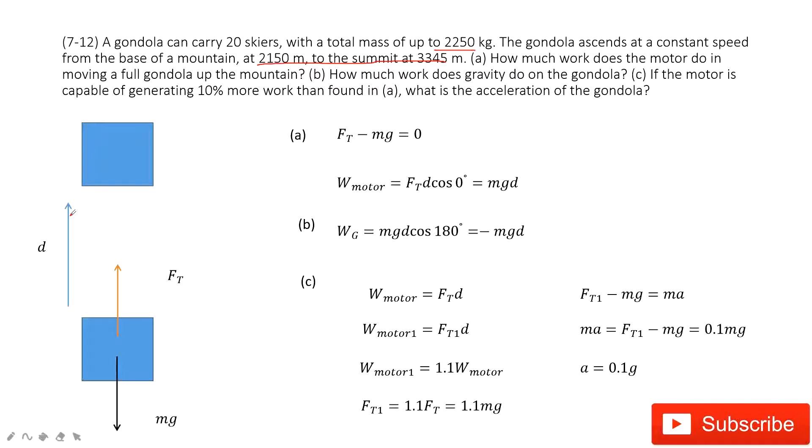The next one asks you how much work does the motor do in moving this object up. So in this one, we can say we consider this object, the forces acting on it: first one gravity, and also the tension. This tension comes from the motor.